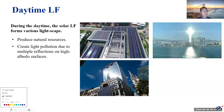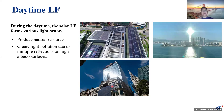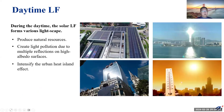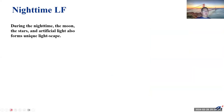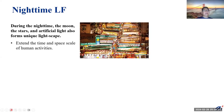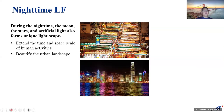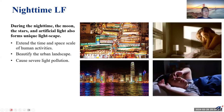If you look at this image, this is a building in London. The vertical surface — we call it a facade — is not a flat surface but looks like an arc. So it reflects back and produces a solar accumulation process on the ground. That can really melt cars, and you can even cook fried eggs on the ground. It can also intensify the urban heat island effect. During the nighttime, the moon, the stars, and artificial light can also form unique landscapes, which can extend the time and space scale of human activities and beautify the urban landscape, but can also cause severe light pollution.